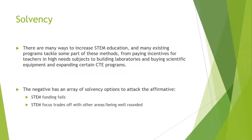On solvency, the affirmative will argue that there are many ways to increase STEM education, and there are many different programs that are already tackling some of the problem. The negative has an array of options to attack the solvency of the affirmative, including arguments that funding for STEM doesn't actually work, and arguments that funding on STEM trades off with other areas or from creating well-rounded students necessary to succeed in business and life.